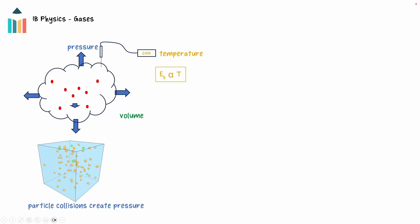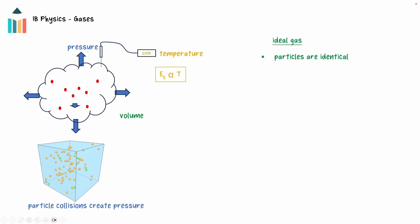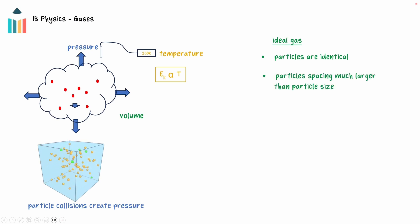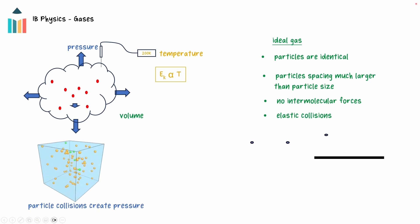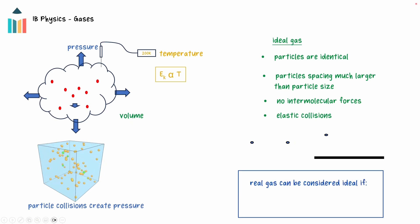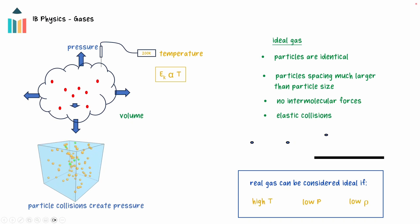In order to make predictions about gas behavior, gases are often assumed to be ideal. The assumptions made for ideal gases include that the particles are identical, the distance between particles is much larger than the size of the particle, intermolecular forces are considered not to exist, and all particle collisions are elastic. The conditions under which gases approximate ideal gas behavior are high temperature, low gas pressure, and low gas density.